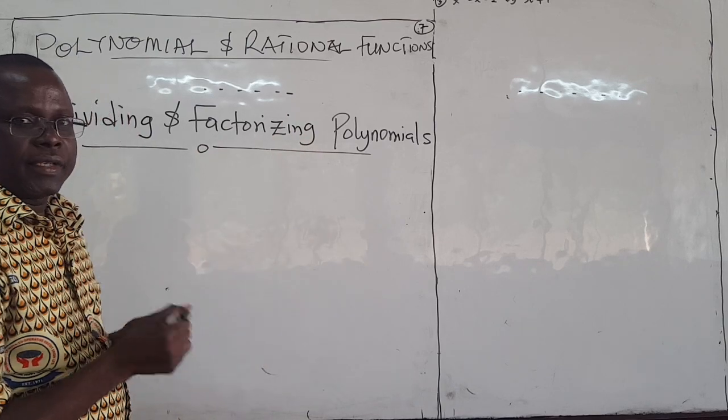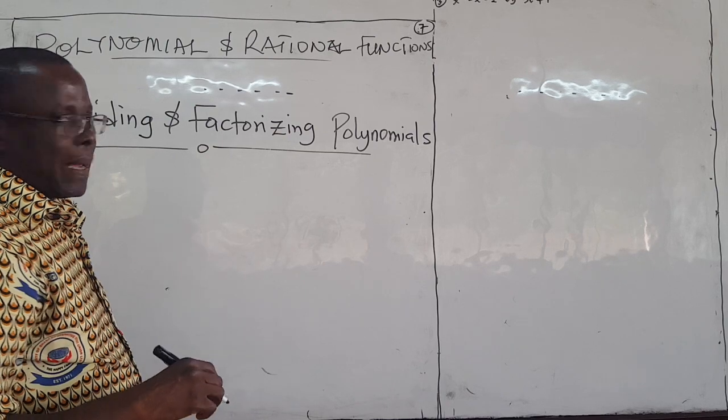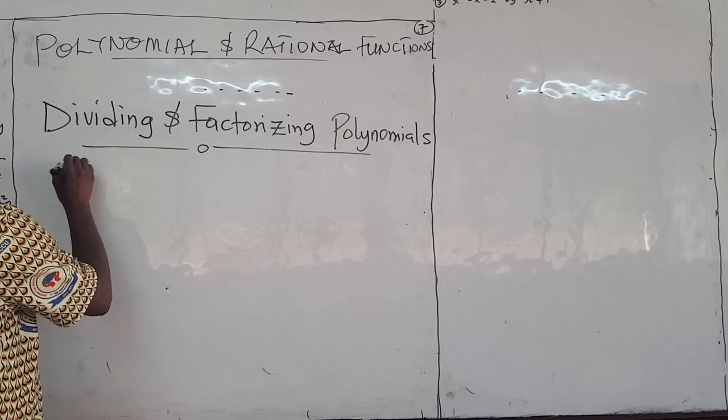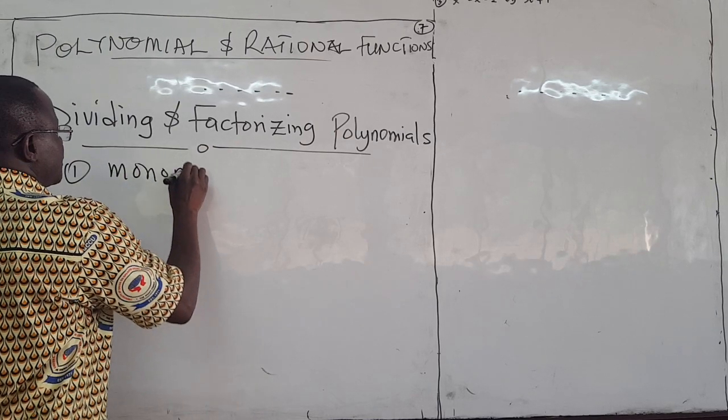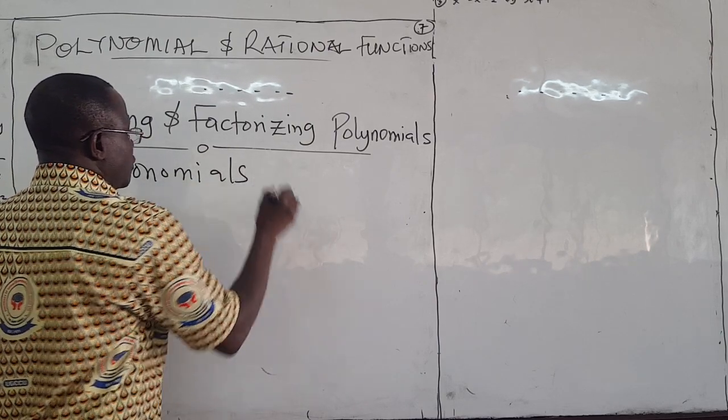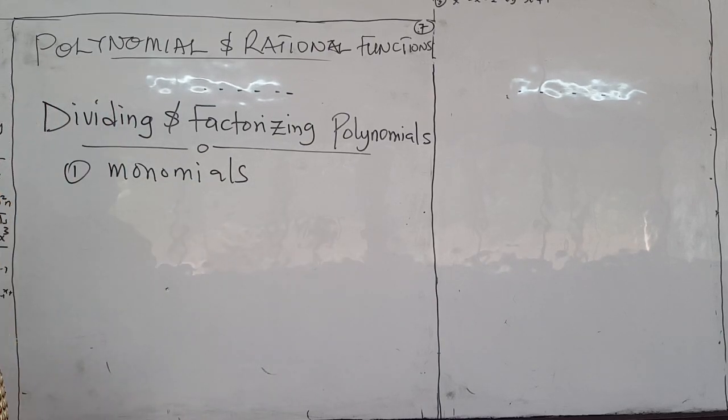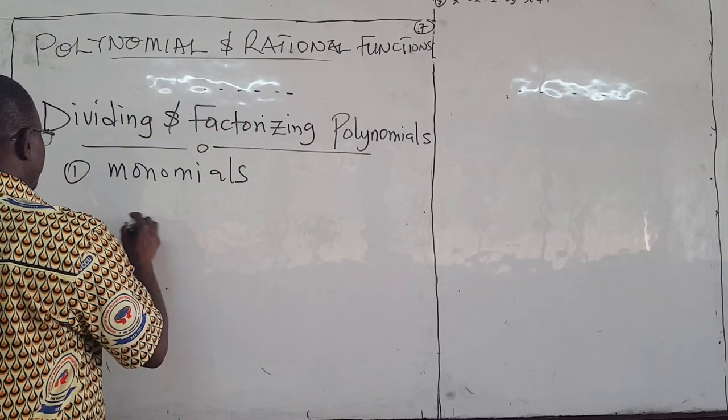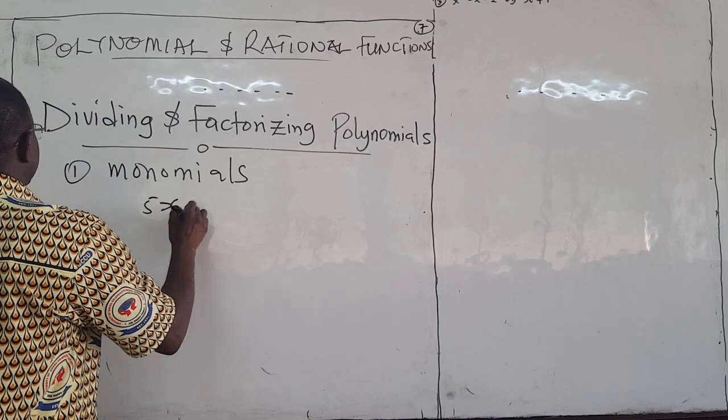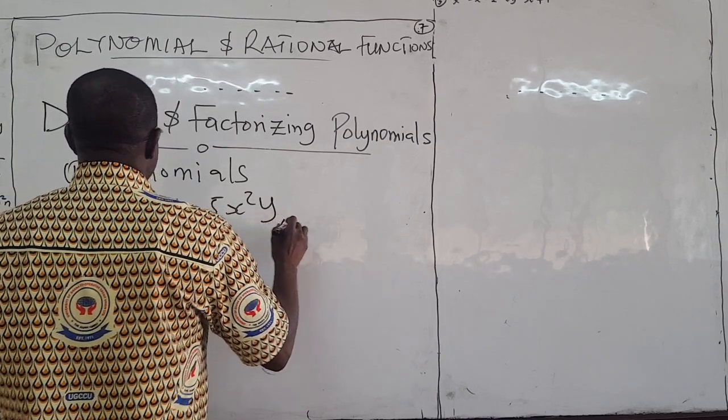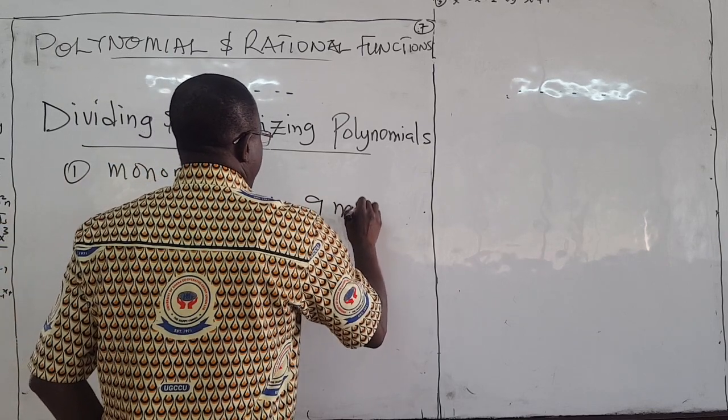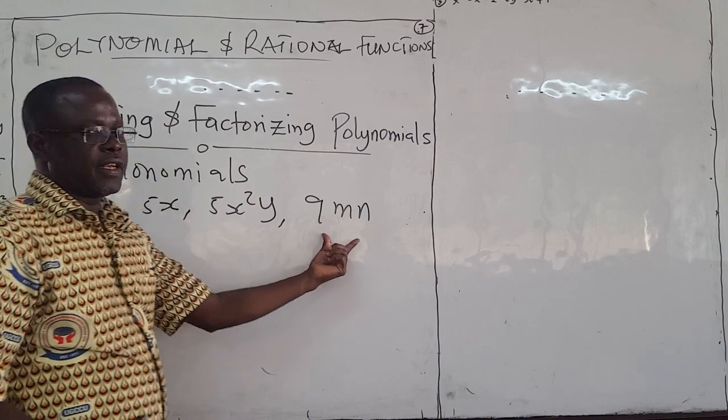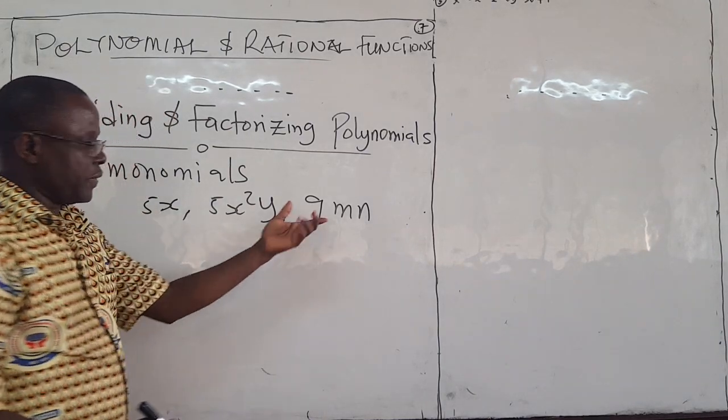They are quite similar related concepts. But before then we'll look at different types of polynomials. So we have what is called monomials. These are polynomials with single expressions. For example, if you have 5x, you have 5x squared, they say y equals 9mn. This should be called a monomial. It's just a single term, a single expression.